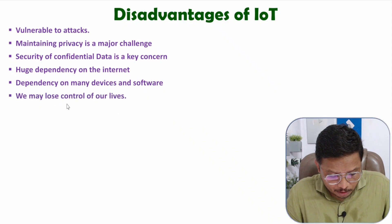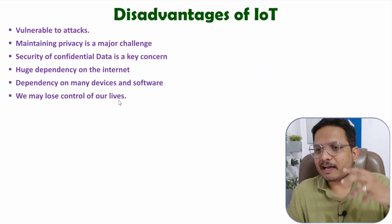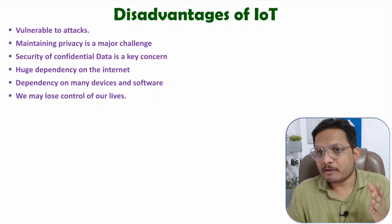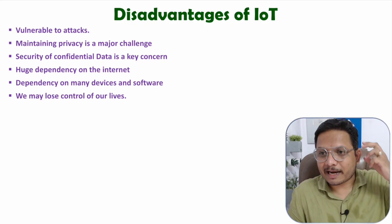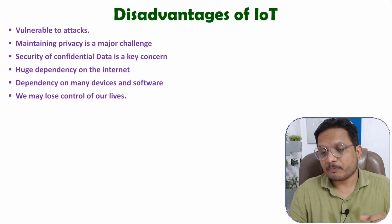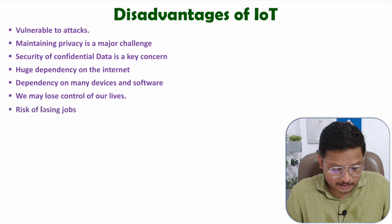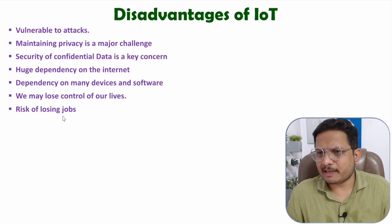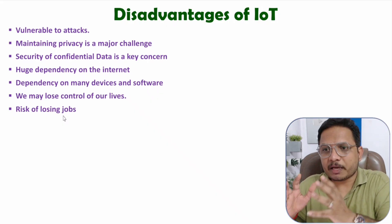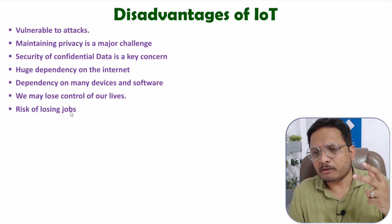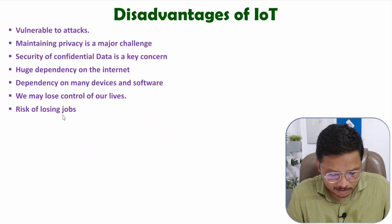When we talk about control, we may lose control of our lives, because things are getting controlled on the internet. If servers are failing, it is quite possible that we may lose control of our lives, as humans don't have an idea about how things are happening. There is also a big risk of losing jobs, and that is happening nowadays. As IoT and AI have come into the picture, many people have lost their jobs because of high production with low cost. So the risk of losing jobs is there because of IoT.